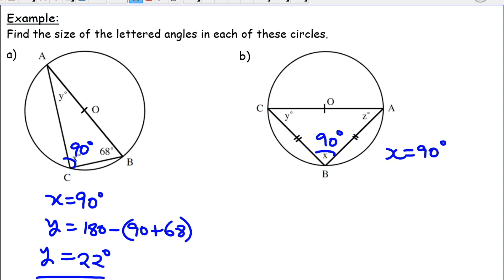This is an isosceles triangle, which means Y and Z will be 45 each. So, Y is equal to 45 degrees. And Z is equal to 45 degrees. Because triangle ABC,